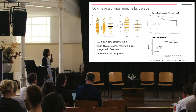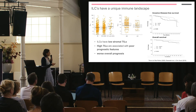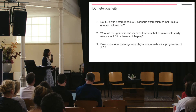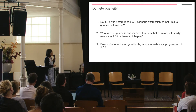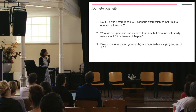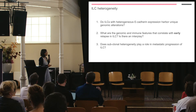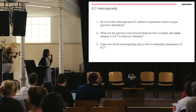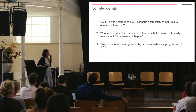We've heard a lot about the immune landscape today, so I won't go over that, but there is some evidence it has a prognostic role in ILCs. In my lab, we're interested in tackling three particular questions that I'll touch on today. First, looking at how ILCs with heterogeneous e-cadherin expression harbour unique genomic alterations — do they differ in genomic makeup and does this explain their heterogeneity? Second, the genomic and immune features that correlate with early relapse in ILC and pleomorphic ILC. Third, some of our newest data on subclonal heterogeneity and its potential role in metastatic progression.